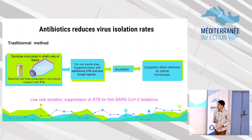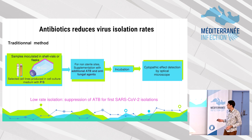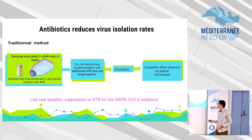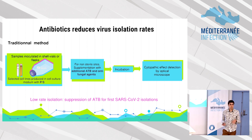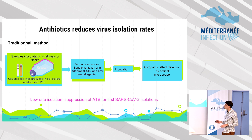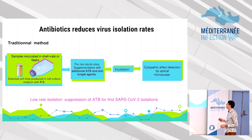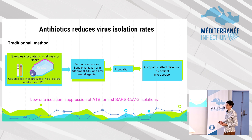The traditional method to isolate these viruses is to incubate the sample in shell vials or flasks. Usually, these cells are maintained in culture with antibiotics, and the sample can also be supplemented with antibiotics depending on the sample. Then cells and sample are incubated until we can observe the cytopathic effect by optical microscopy.